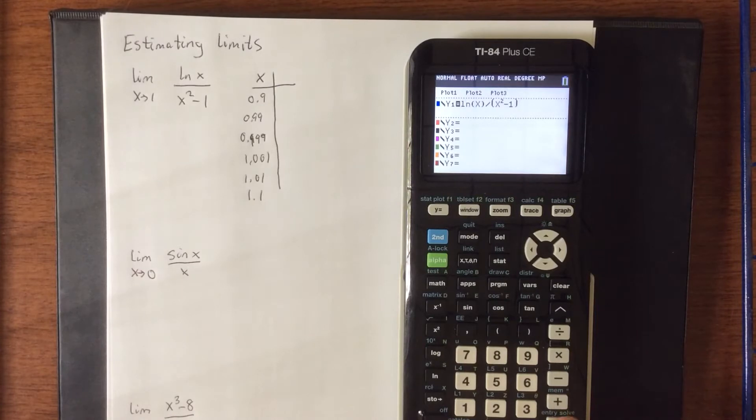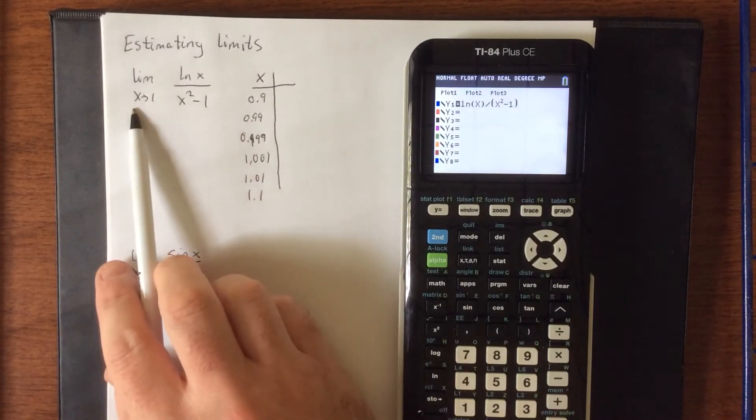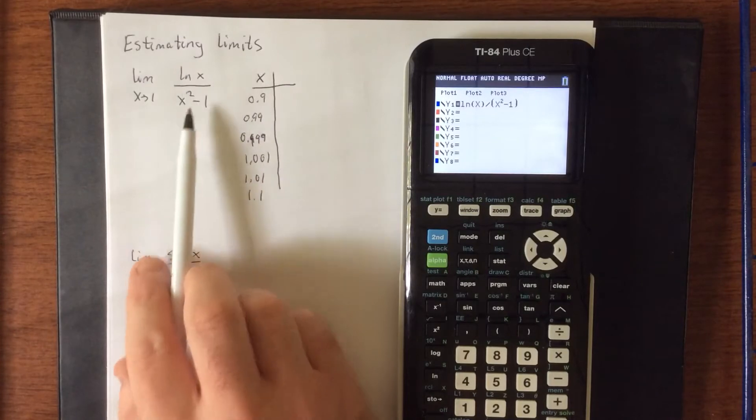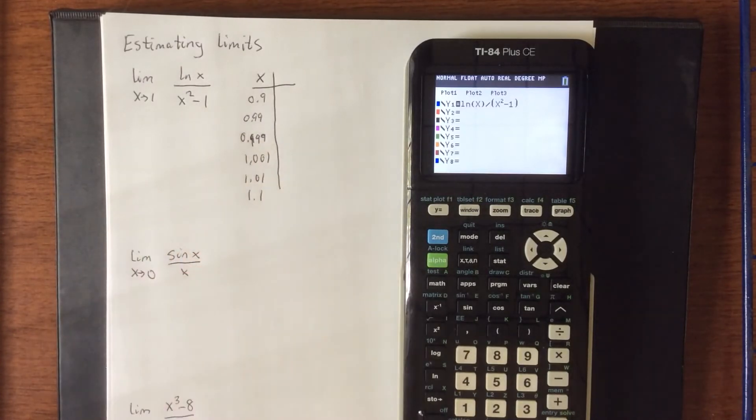Now you may have noticed that if I were to simply try plugging in x equals 1, I would wind up with a numerator of 0 and a denominator of 0. Well, what's 0 divided by 0 equal to? Well, nobody really knows, because it's undefined. However, we can estimate this limit.